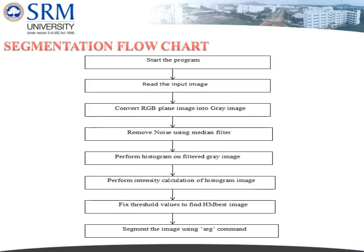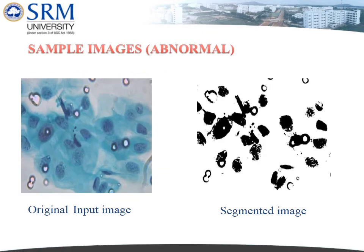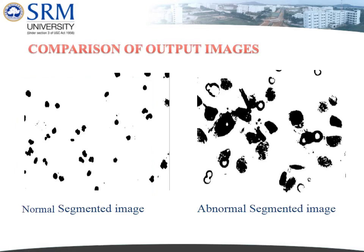The segmentation flowchart explains the same procedure as described in the segmentation algorithm. The output images of normal samples show the original input image on the left side and the segmented image on the right side. A comparison between the normal segmented image and the abnormal segmented image shows a visible difference.